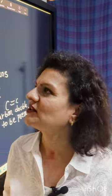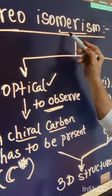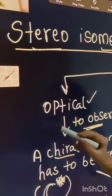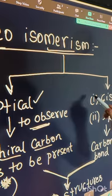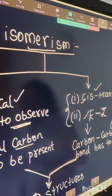Welcome to today's discussion. In this class we are going to study about stereoisomerism. Stereoisomerism is classified into two types: optical isomerism and cis-trans isomerism, as well as E and Z isomerism.